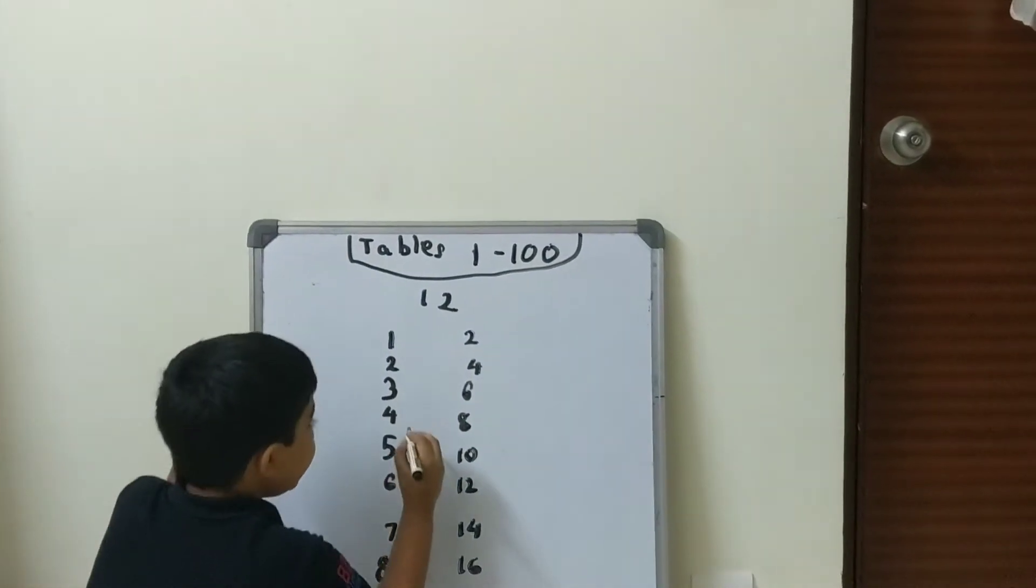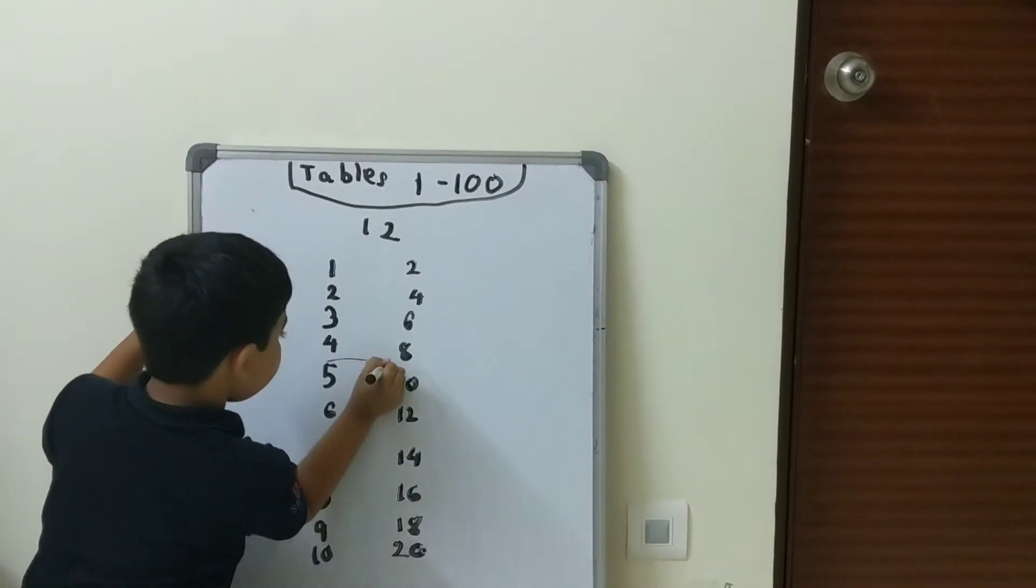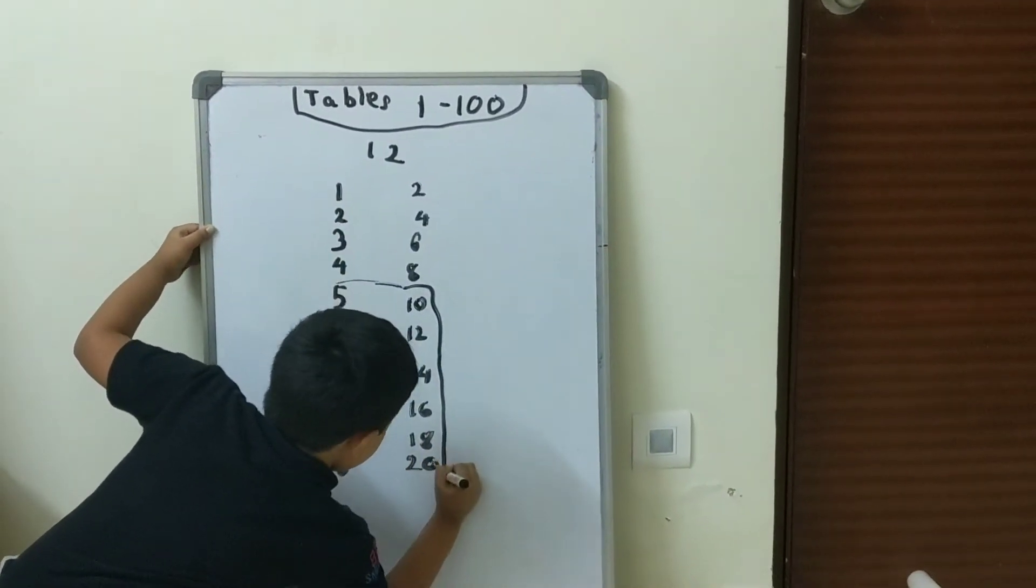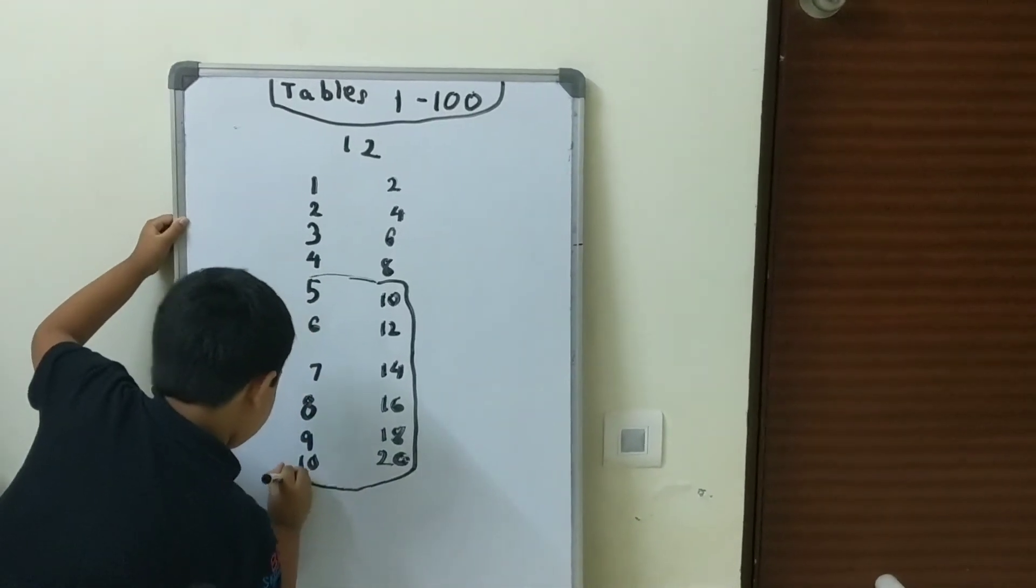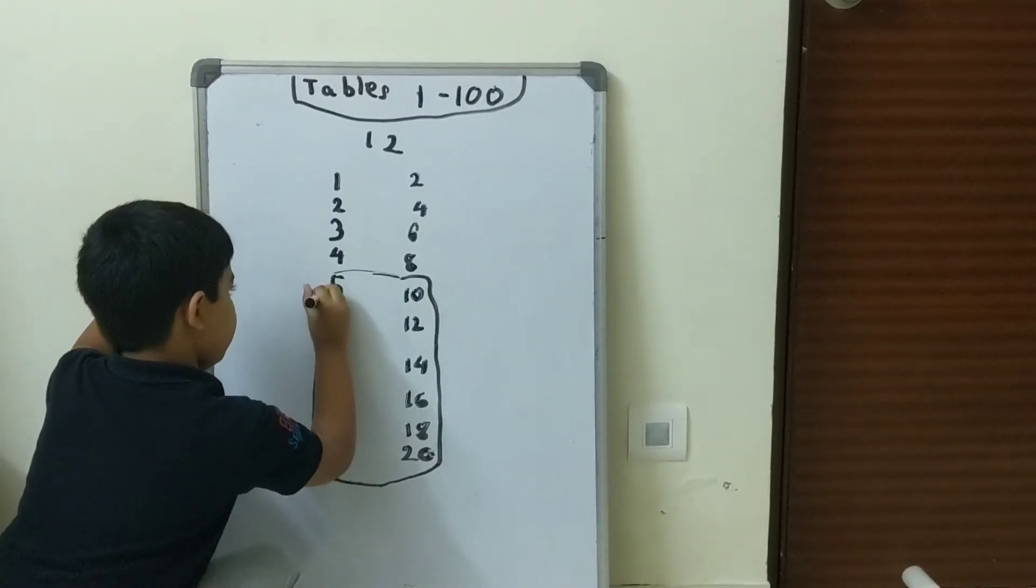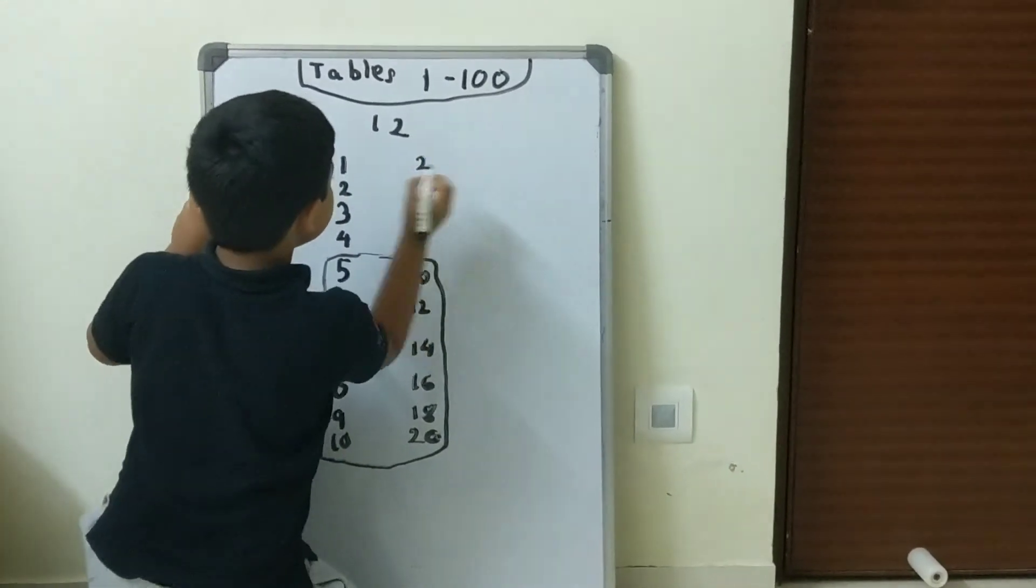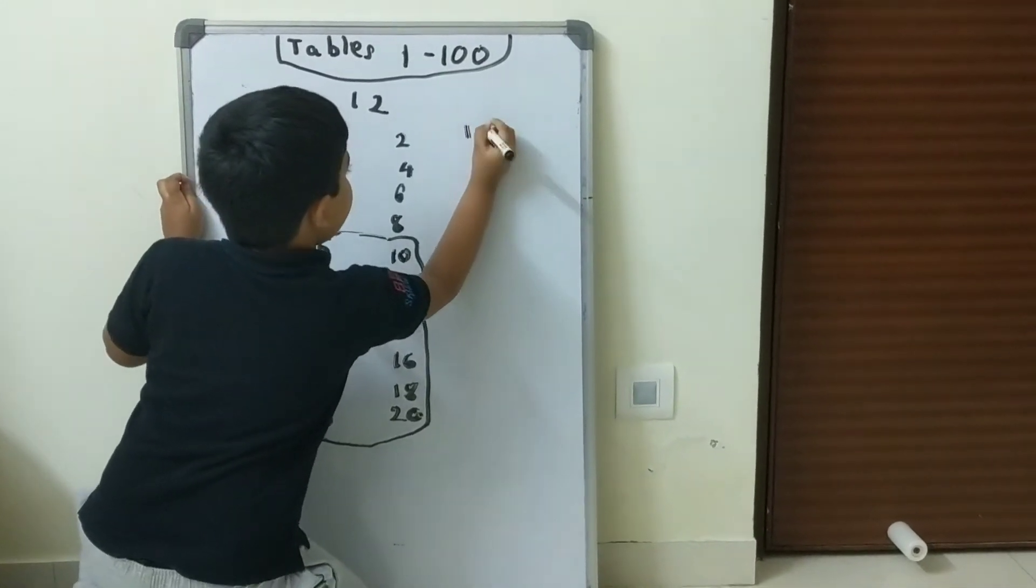And now we make a box right here. This is 12.